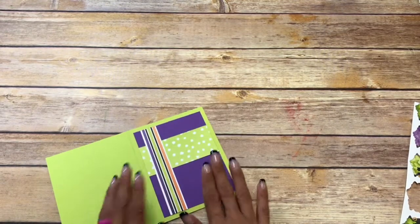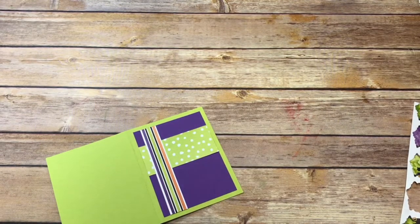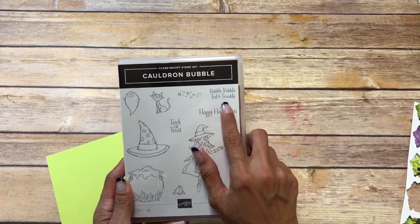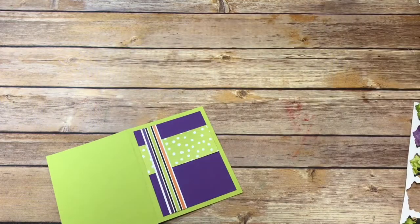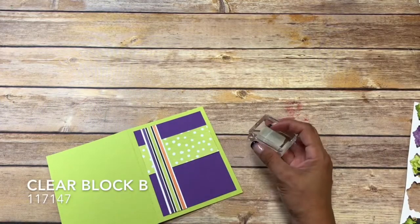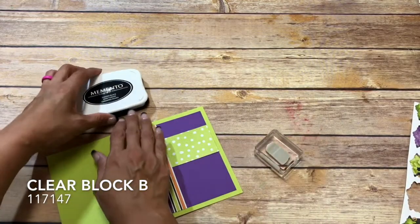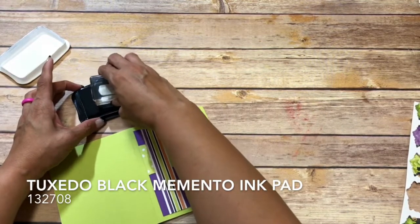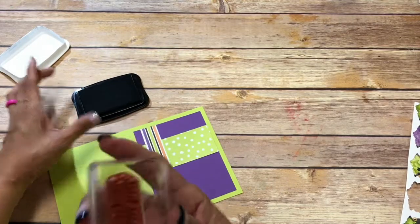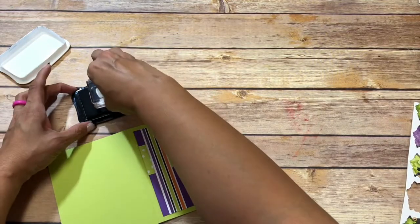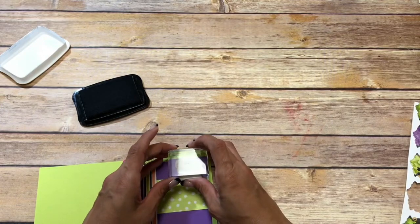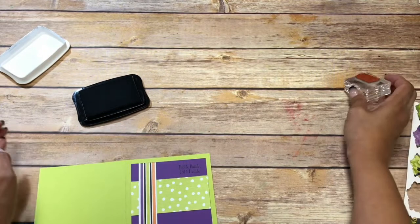All right, now I'm going to bring in the stamp set and that's Cauldron Bubble, and we're going to be using Bubble Bubble Toil and Trouble. I have that mounted on Clear Block B and I'm going to get my Tuxedo Black Memento ink pad and just going to put it right there at the top.